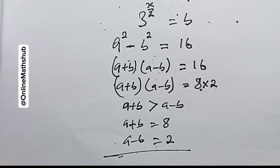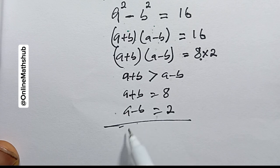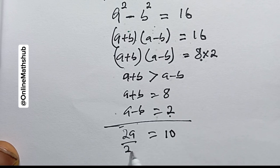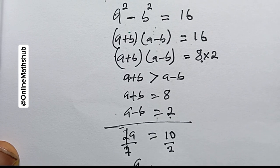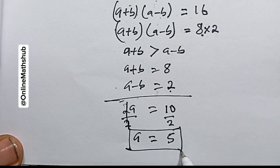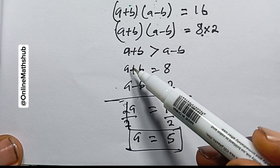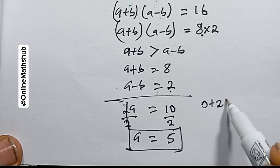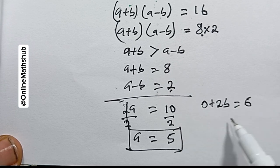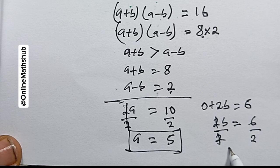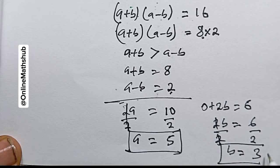We solve these two equations simultaneously. Adding them: 2a = 8 + 2 = 10, so a = 5. Subtracting them: 2b = 8 − 2 = 6, so b = 3. We've found the values of a and b.